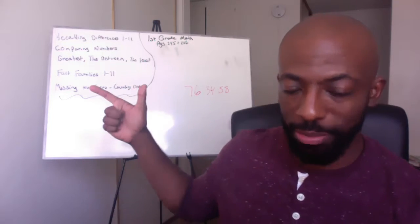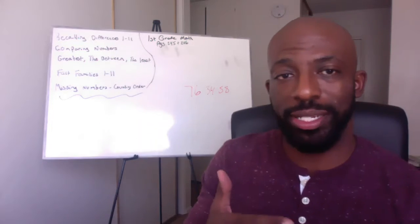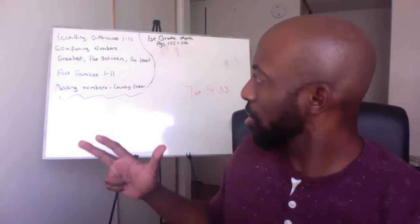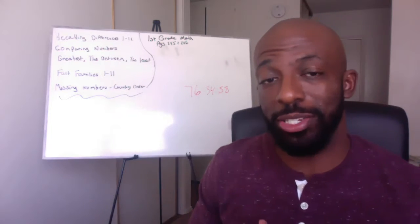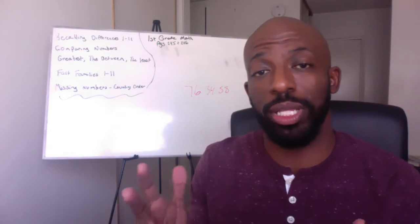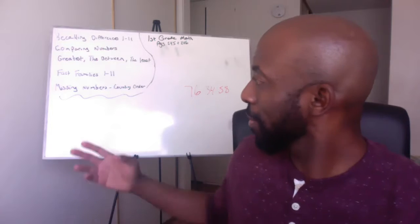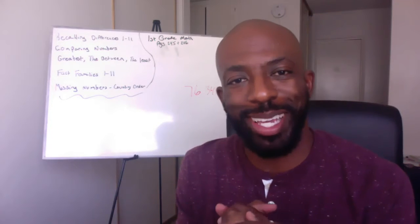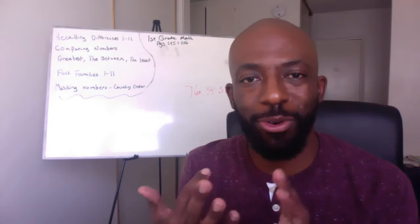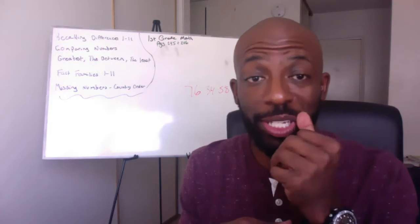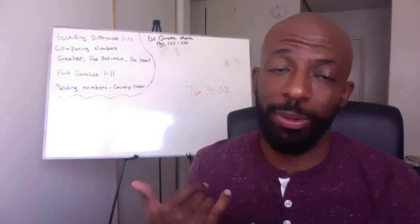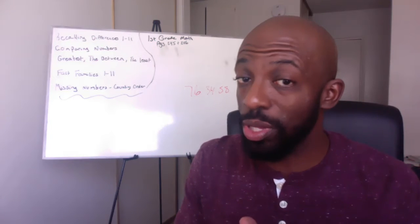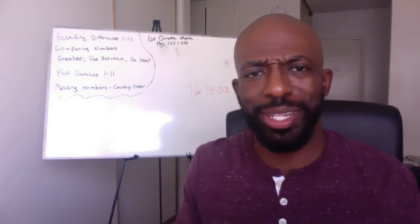Number two, we are going to actually be comparing numbers — the greatest, in between, and the least. Number three, we're doing fact families, which is more work with numbers one through 11. And then the fourth thing: you're actually going to write the missing numbers in order. You've got to know what comes after three, four, five, six, and when you get to 10, what comes after that. We'll be working our way up from the ones place to tens place up to the hundreds place.